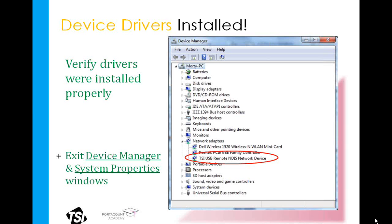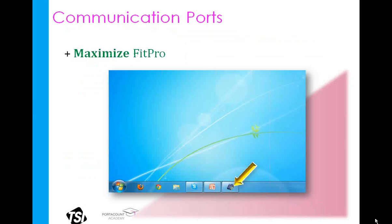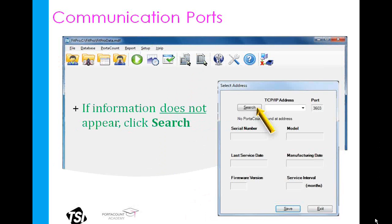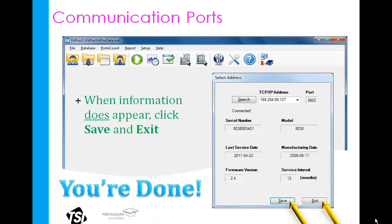At this point, close your Device Manager window. From your Windows toolbar at the bottom of your screen, reopen or maximize the FitPro software. Go to Setup and then Communication Ports. If the information does not first appear, click Search. Once the information appears, click Save and Exit — you now have successful communications between the FitPro software and the Port Account.